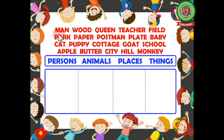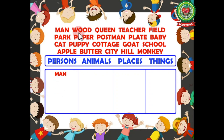First we have 'man' — M-A-N. Man is the name of a person, so we will write man under the column of persons. Next we have 'wood' — W-O-O-D. Wood is the name of a person, so it is a noun.